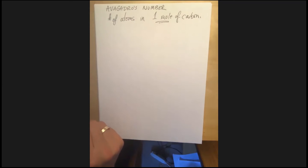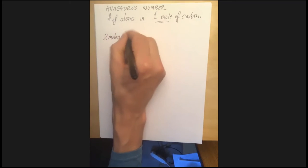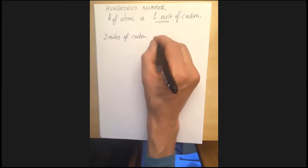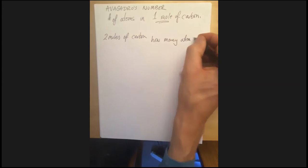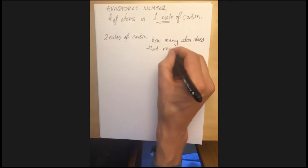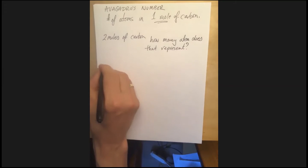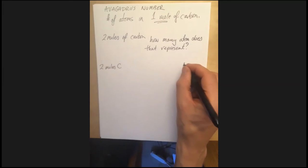So Avogadro's number is the number of atoms in one mole of carbon and that's how it's defined. And then we use it for every other element, compound, every other substance that we're trying to figure out how much one mole of it is. Okay. So let's say that we've got two moles of carbon and I want, and you're asked, I don't know why you would want to know this, but you're asked to find out how many atoms does that represent.